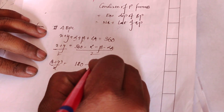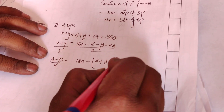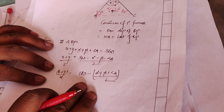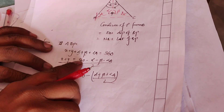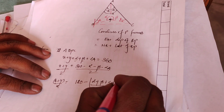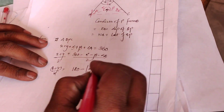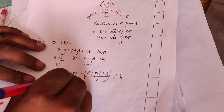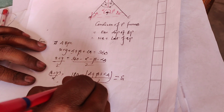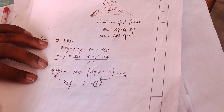So we get 180 degrees. What is the equation? It's called x, it's called delta 1. Therefore, x plus y is equal to 2 delta 1. It's called delta 1.